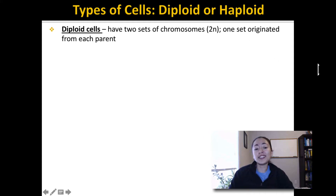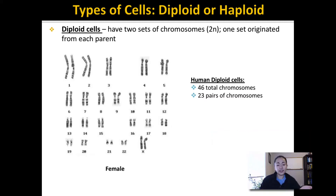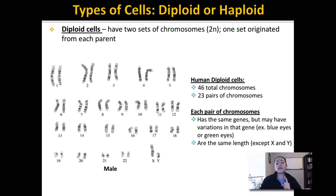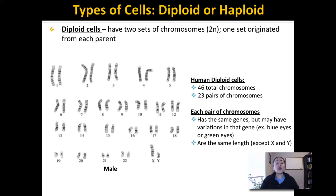Diploid cells in humans have 46 chromosomes: 23 chromosomes came from your father and 23 chromosomes came from your mother, so there are 23 chromosomes in each set. Each chromosome you receive from one parent is similar to one of the chromosomes you receive from the other parent. Each pair of chromosomes are similar because they contain the same genes but may have different variations of those genes. For example, both could carry the gene for eye color, but one parent could have given you the blue eye color variation and the other parent the green eye color variation. Notice also that all pairs of chromosomes are the same length except the sex chromosomes X and Y.